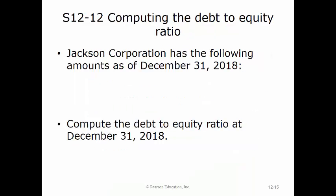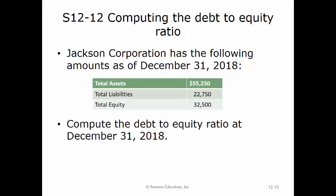Jackson Corporation has total assets of $55,250, total liabilities of $22,750, and total equity of $32,500 as of December 31st, 2018. To compute the debt-to-equity ratio, we divide total liabilities of $22,750 by total equity of $32,500, and we get 0.70 or 70%.